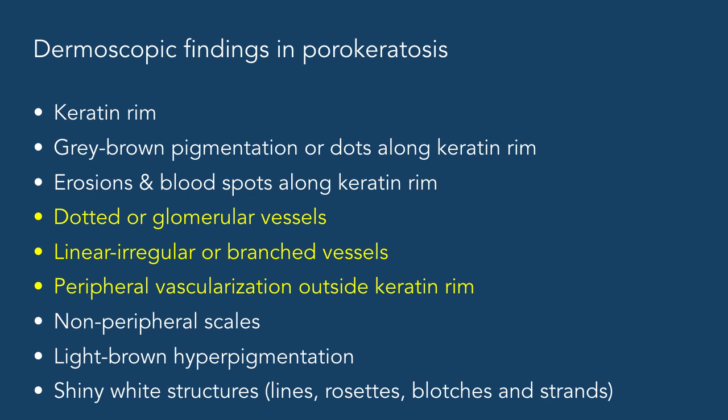In the central area, vessels can be present. These can be dotted or glomerular, linear, irregular or branched, or even polymorphous. Discrete peripheral vascularization outside the keratin rim can also be visualized sometimes. The central area can also feature scales, diffuse areas of light brown hyperpigmentation, and even shiny white structures including lines, rosettes, or blotches and strands.